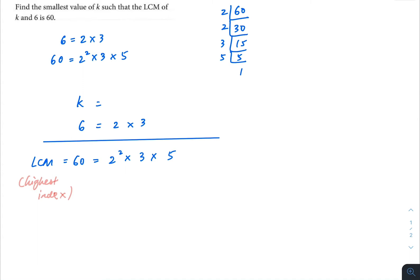So for LCM 60, we have 2 squared, and the power 2 is the highest index of both k and 6. However, for 6, we have only 2 to the power 1. So this means that k has to be 2 squared, so that we can take this, and it will be considered in the calculation for LCM.